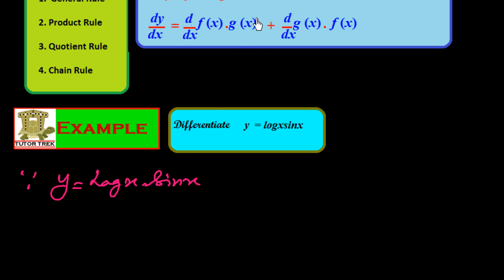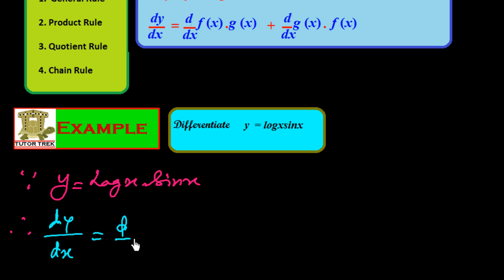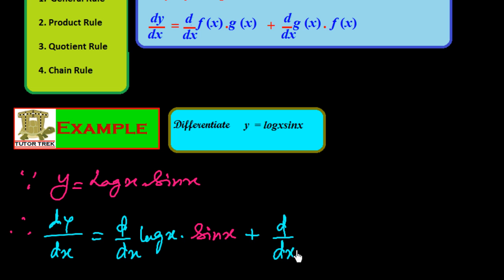We differentiate the first function and keep the second function as it is, plus the differentiation of the second function and the first function as it is. Therefore, d y over d x is equal to d/dx of log x, multiplied by sin x as it is, plus the differentiation of sin x multiplied by log x as it is.